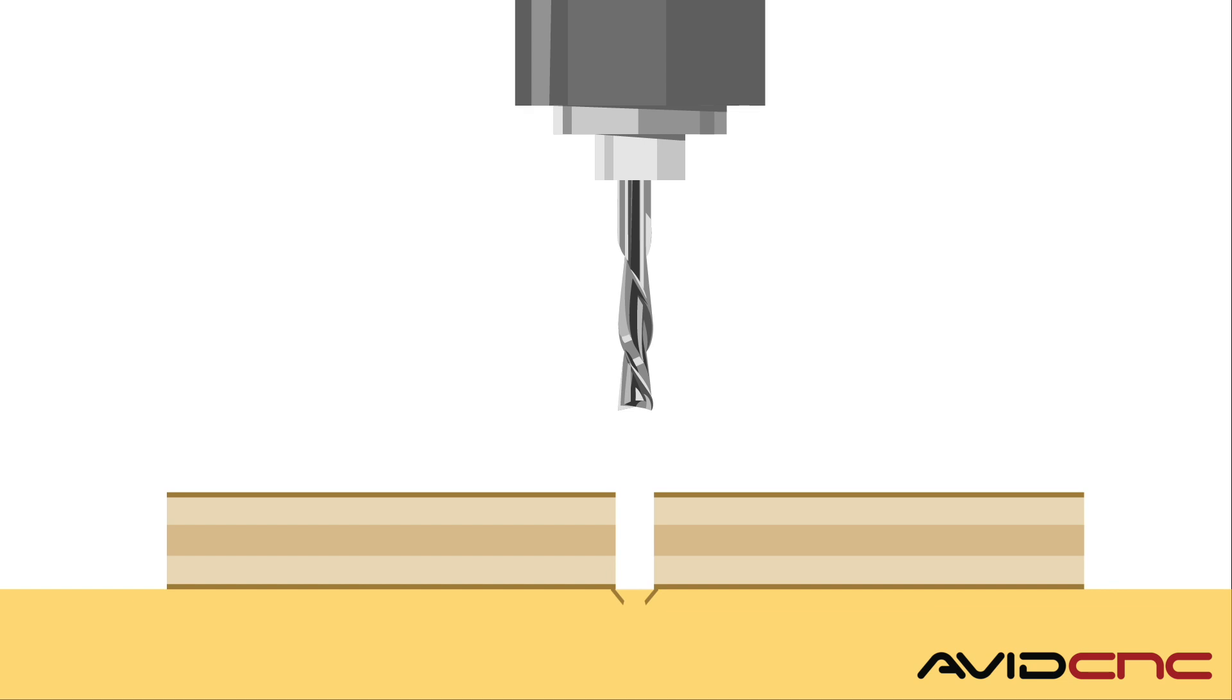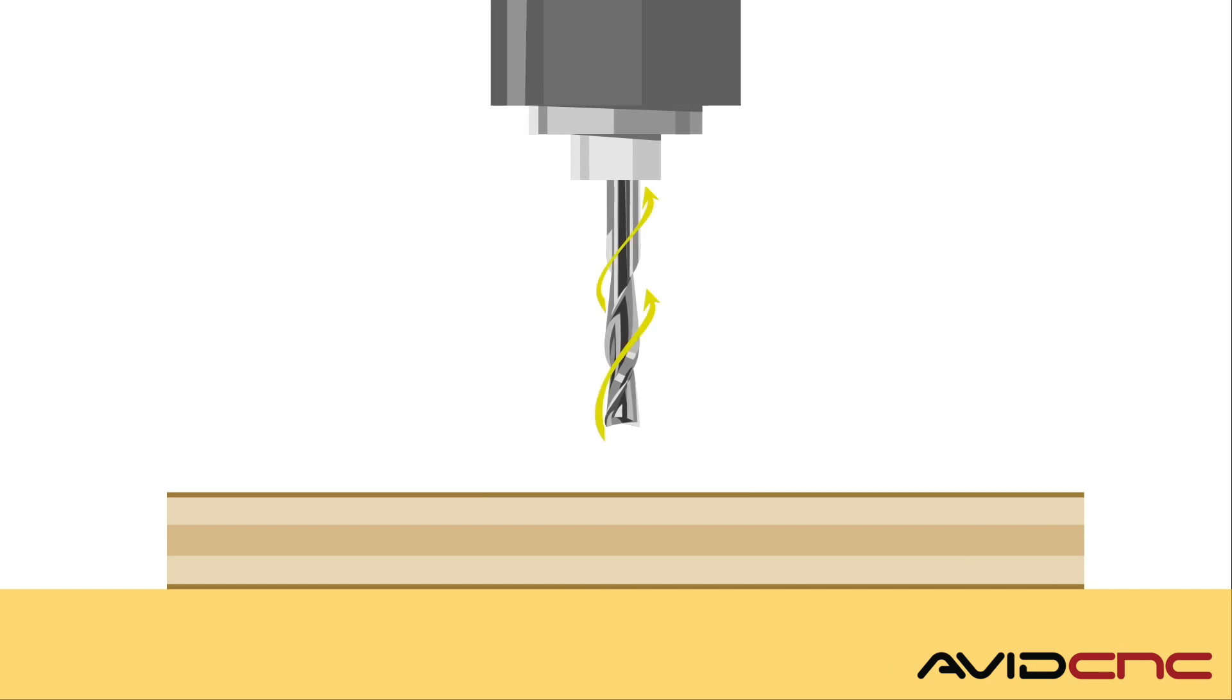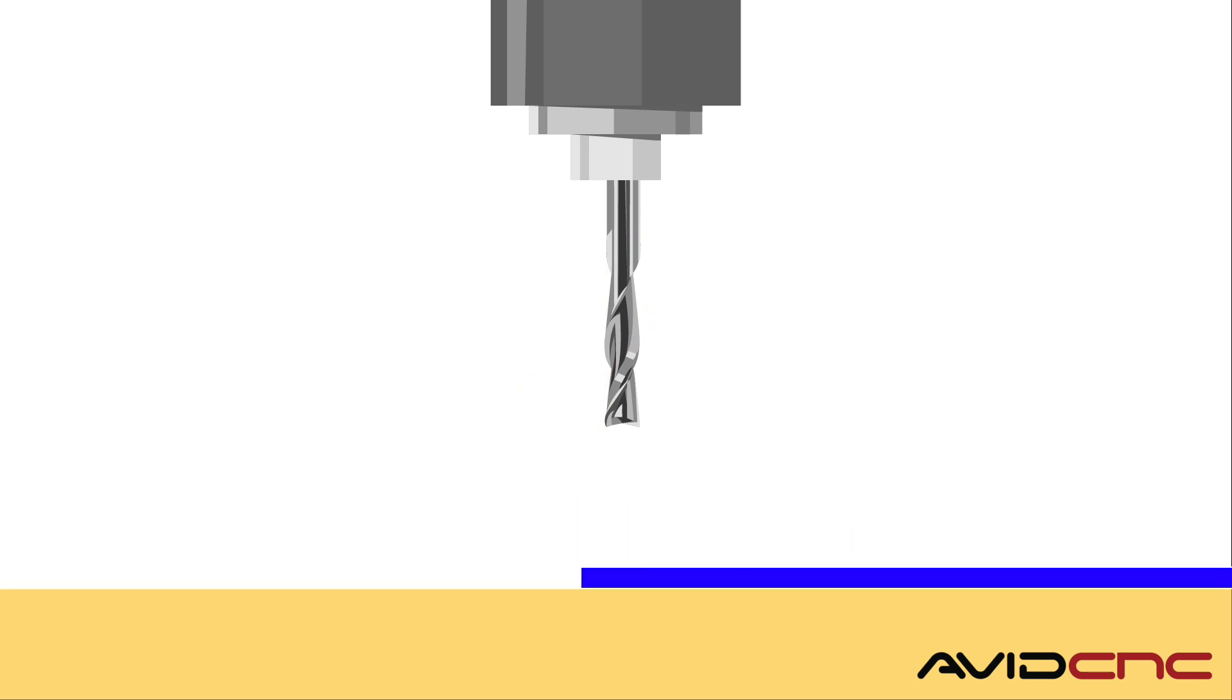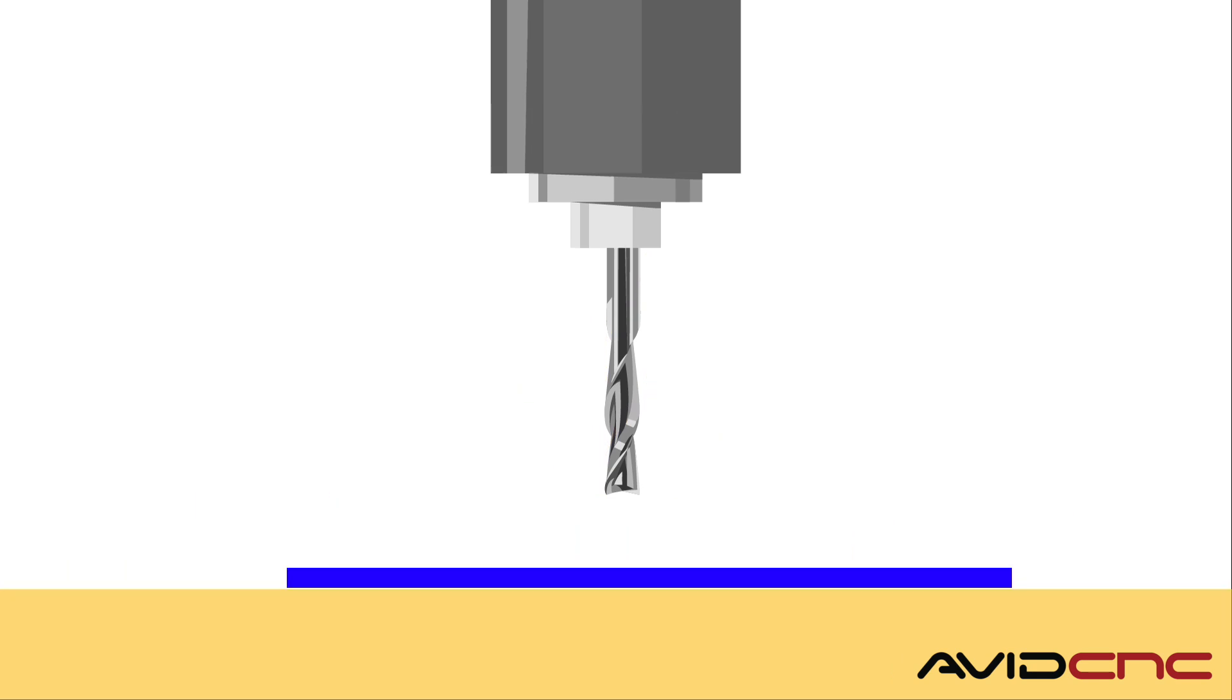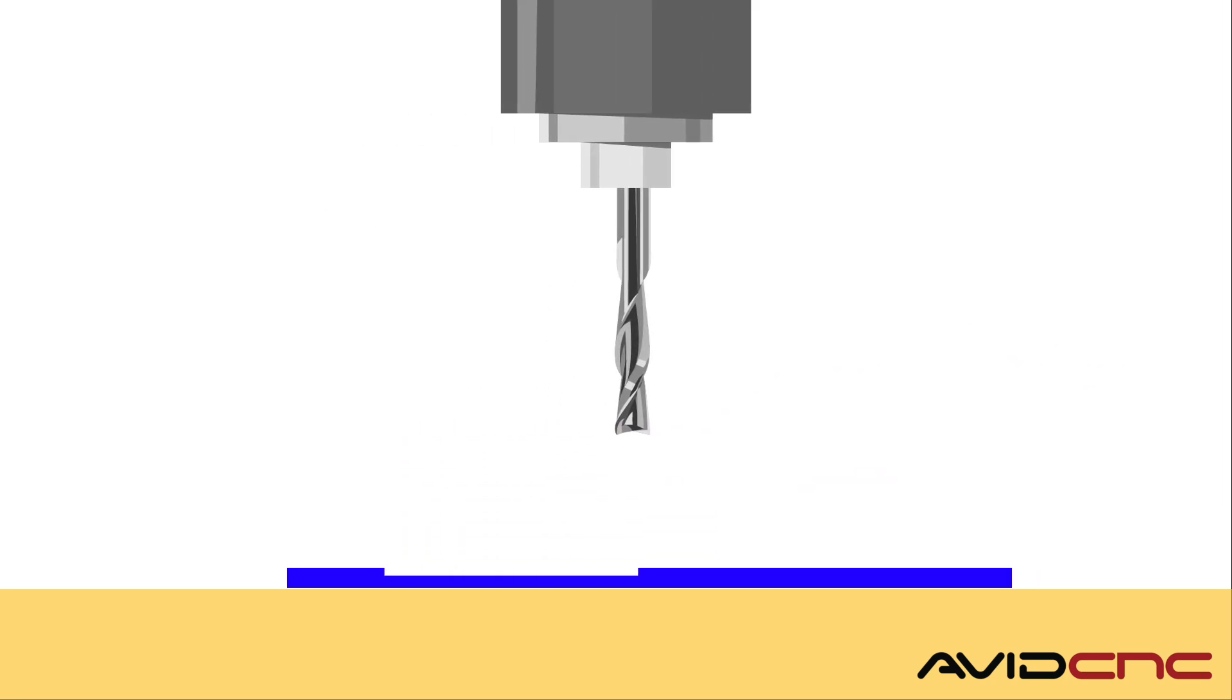Next, we have up cut bits, or up spiral bits. The flutes of an up cut router bit twist in the same direction as a traditional drill bit, which gives them the ability to lift the chips up and away from the material as you're cutting. This is ideal for heat-sensitive materials like acrylic, with chips that will potentially melt from the excess heat generated and trapped by a down cut bit.